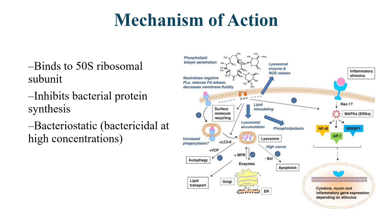Mechanism of Action. Azithromycin works by binding to the 50S subunit of the bacterial ribosome, thereby inhibiting protein synthesis. This results in a bacteriostatic effect, meaning it halts bacterial growth. In high concentrations or against very sensitive organisms, it can act bactericidally.